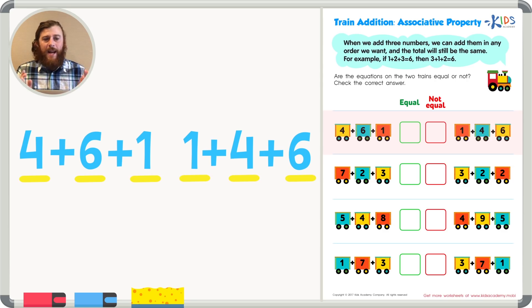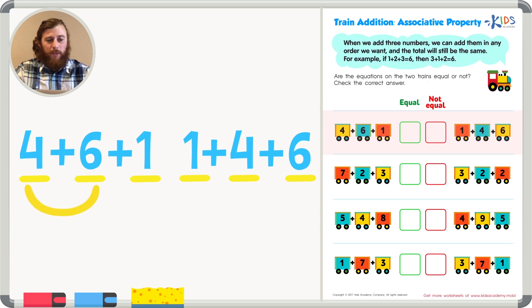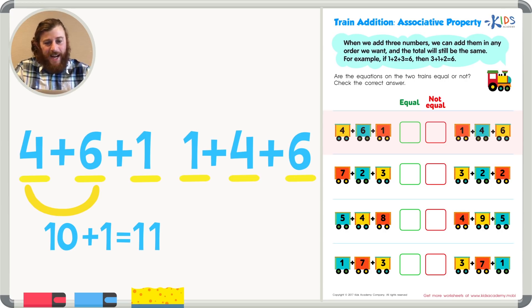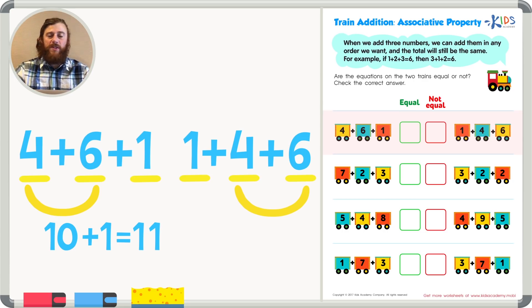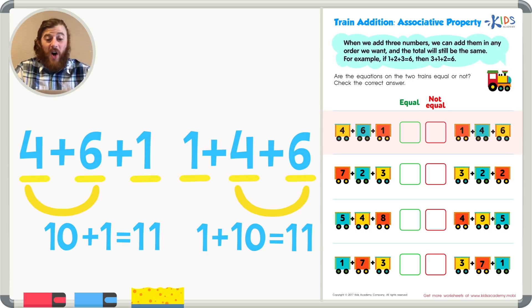But just to be sure, let's add up our numbers to make sure that the sums are equal to each other. Remember, we can add in any order that we want. So let's add the numbers together that are easiest for us. I know that 4 plus 6 makes a 10, so 4 plus 6 equals 10. Then I can just add 10 plus the 1 left over, and 10 plus 1 equals 11. Now let's check the second train — again I'm going to add 4 plus 6 first, even though they're not the first two numbers. 4 plus 6 equals 10, and 1 plus 10 equals 11. These two trains are equal.